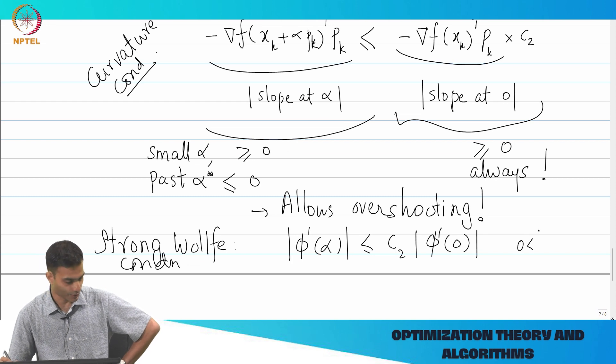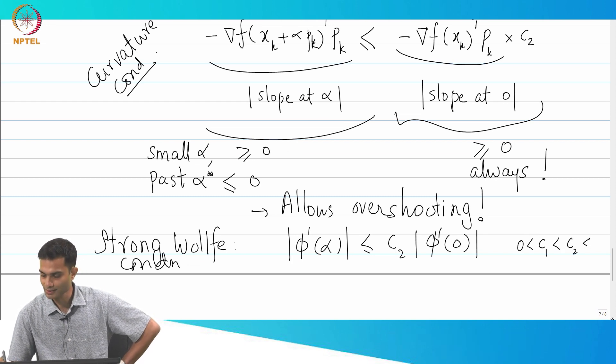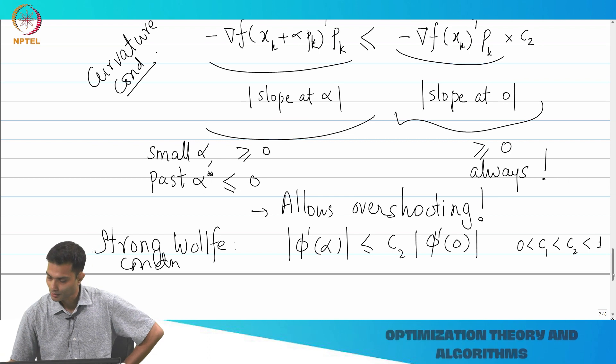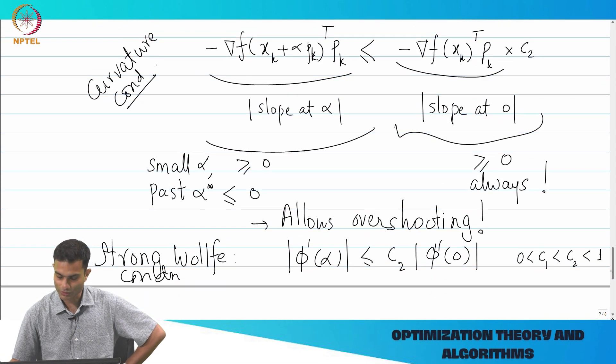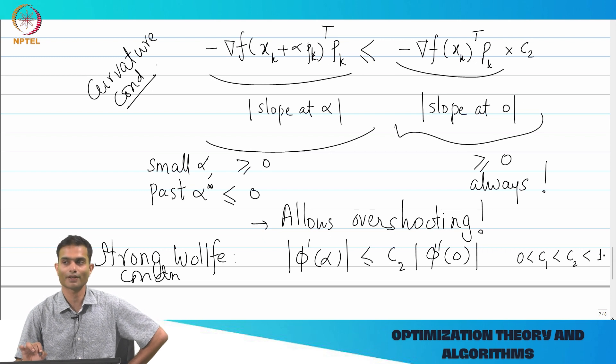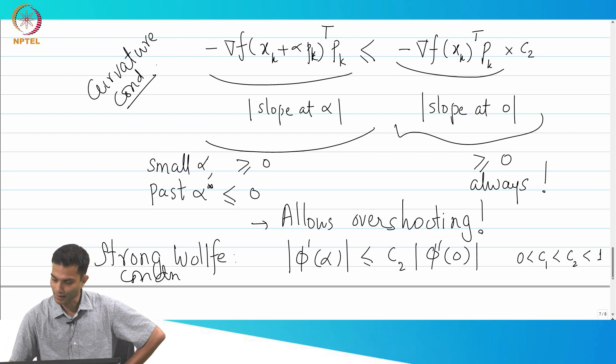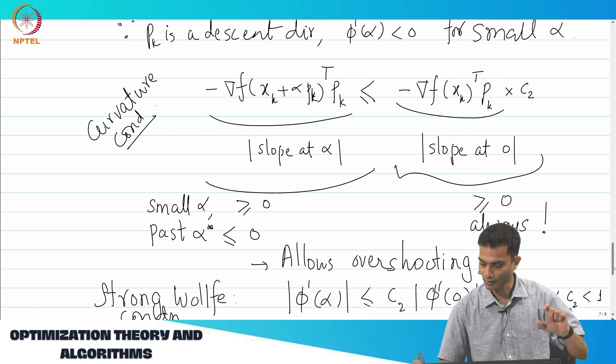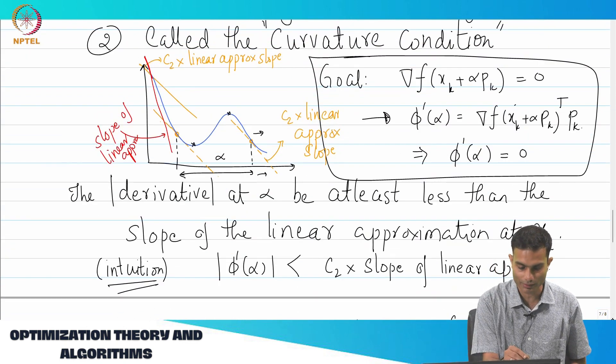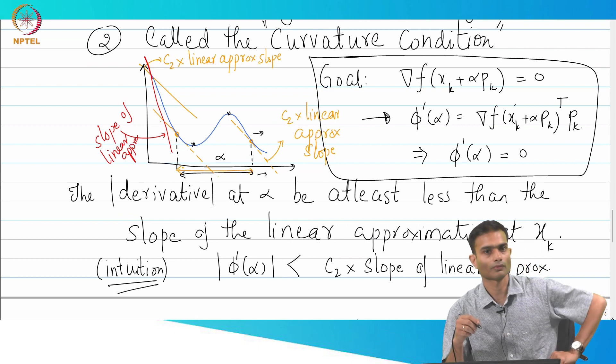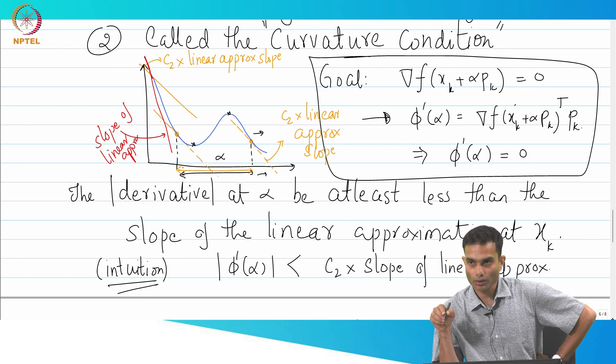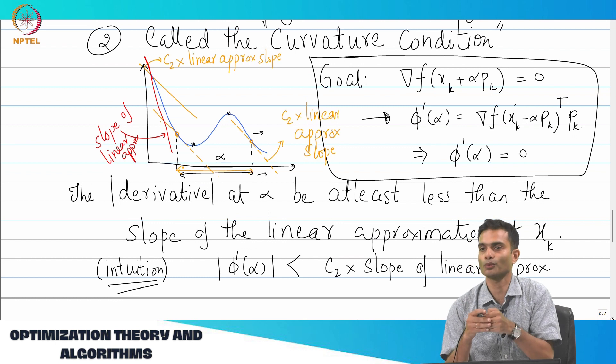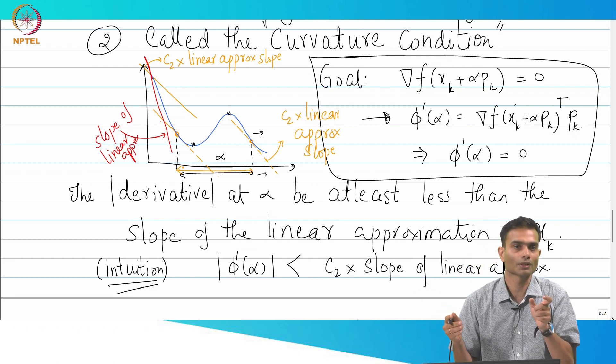Typically, what is done is that your C_2 is a little bit larger than C_1. But having done this, this intuitively we understand that we do not overshoot too much, but can we try to plot where this is going to happen? With the regular Wolf condition, I have this entire orange range of alphas are allowed. Now when I put in the mod, is this range reduced? That was the whole intuition, we wanted to prevent overshooting.